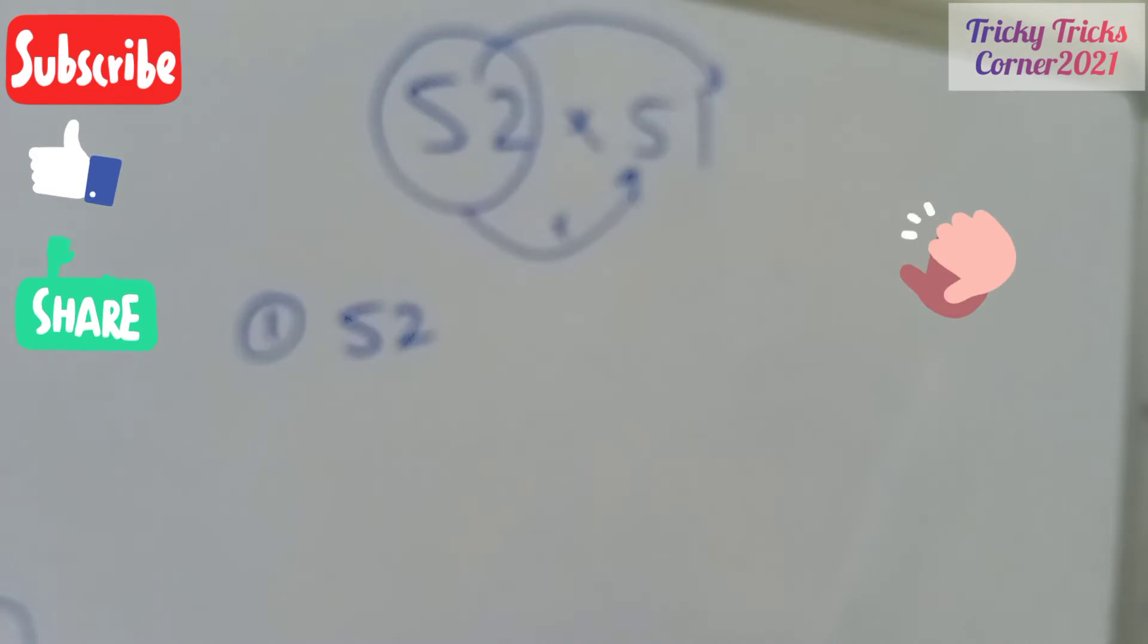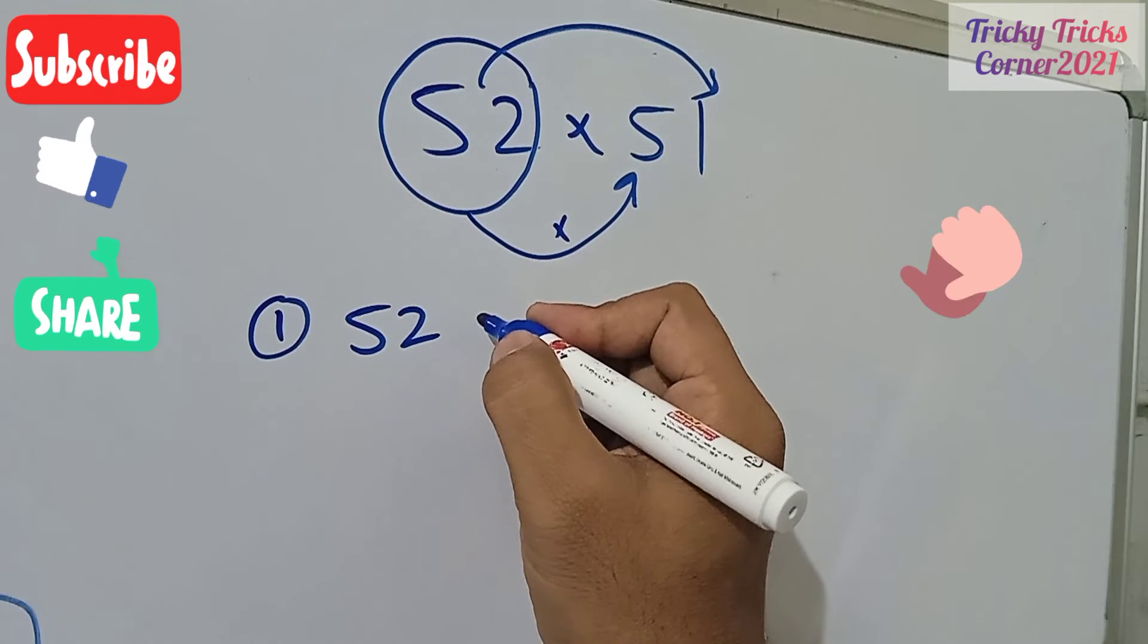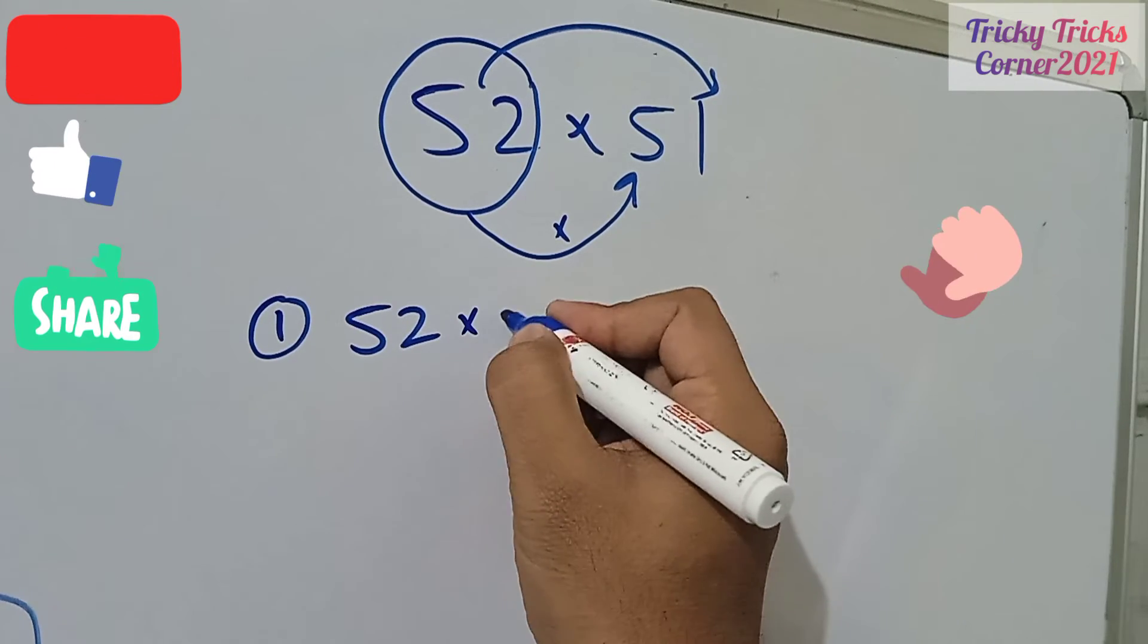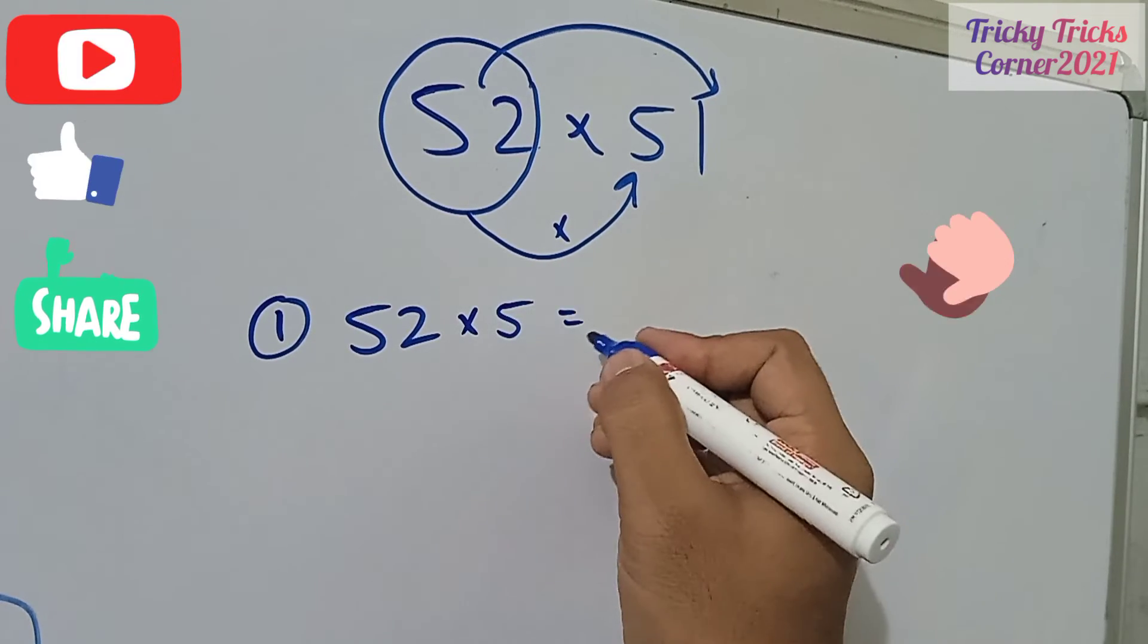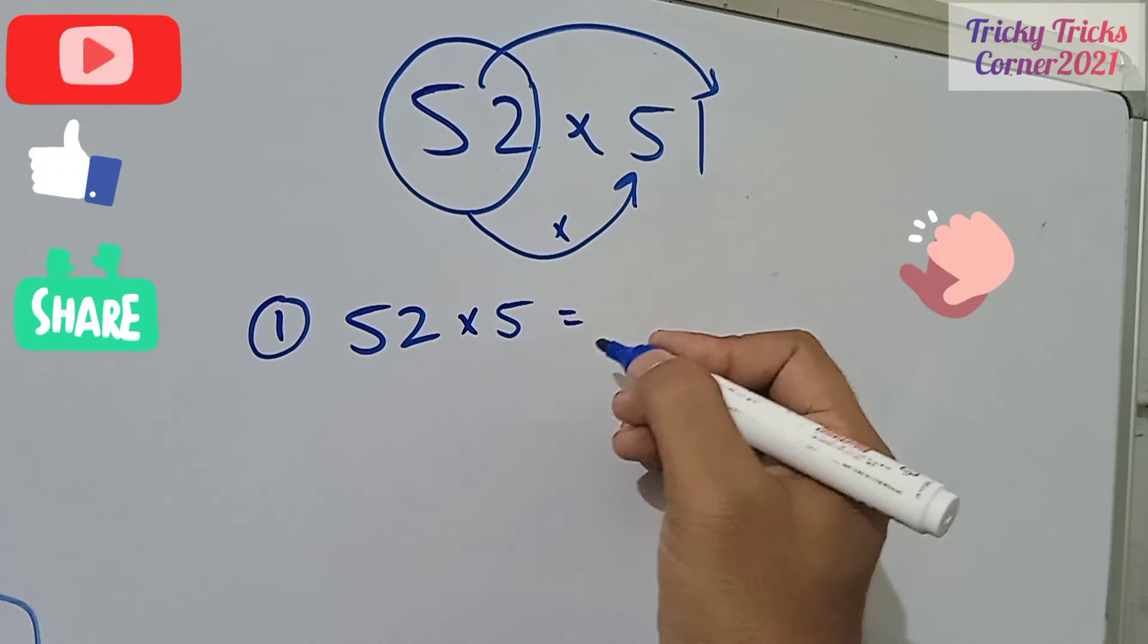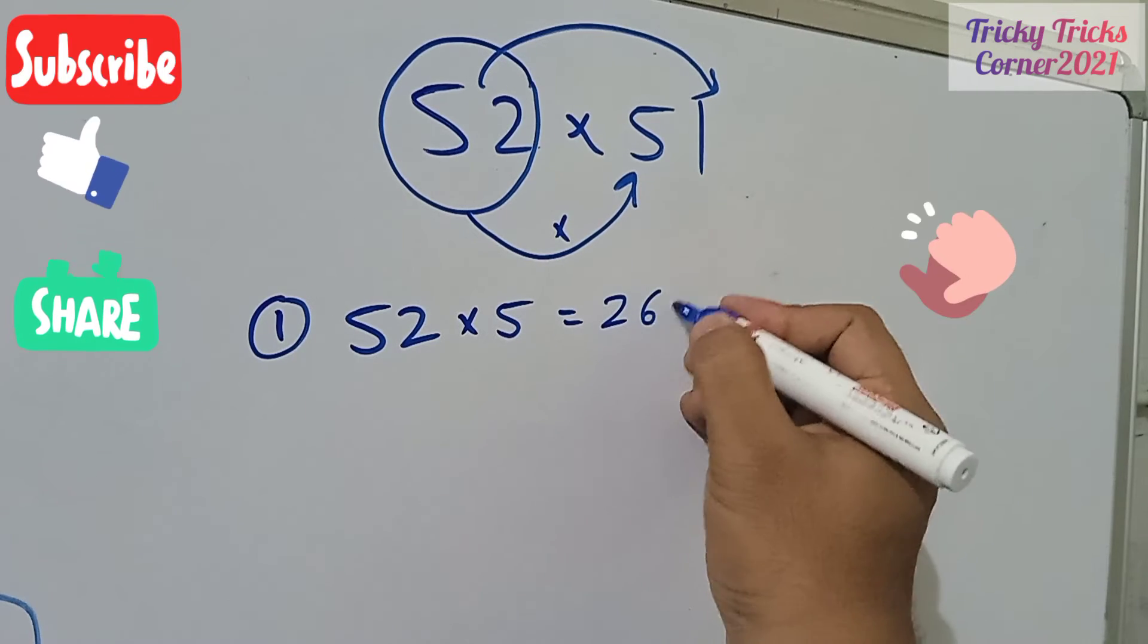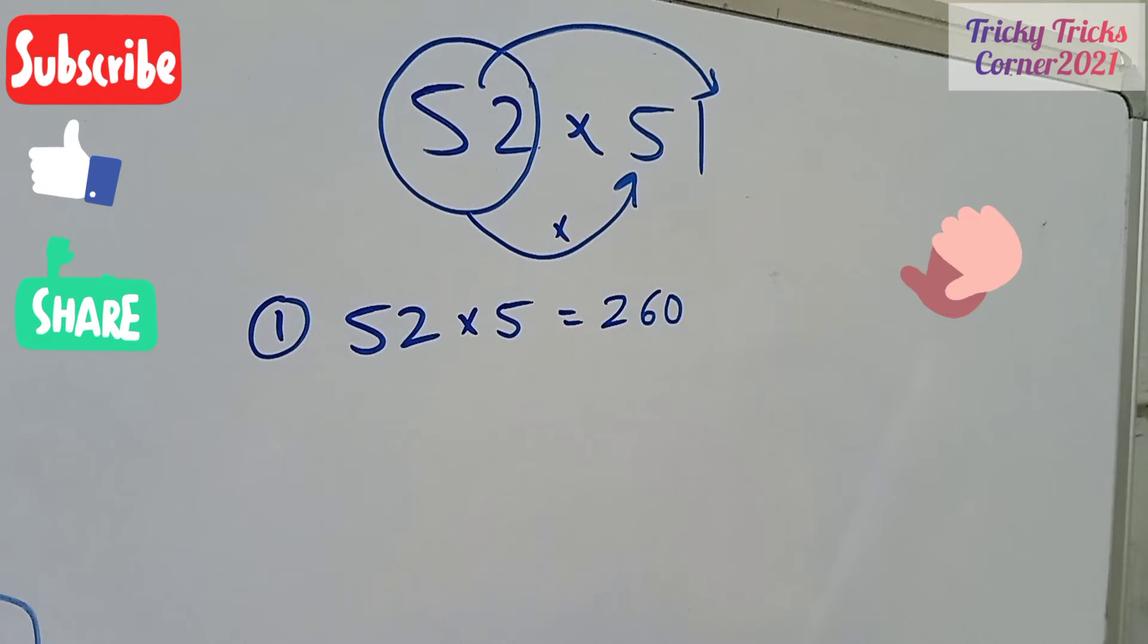Okay, now if you are going to have this number, step number 1 as I have told you, this is 52. 52 multiplied by 5, it gives you, you have to calculate in your head, this is 260.